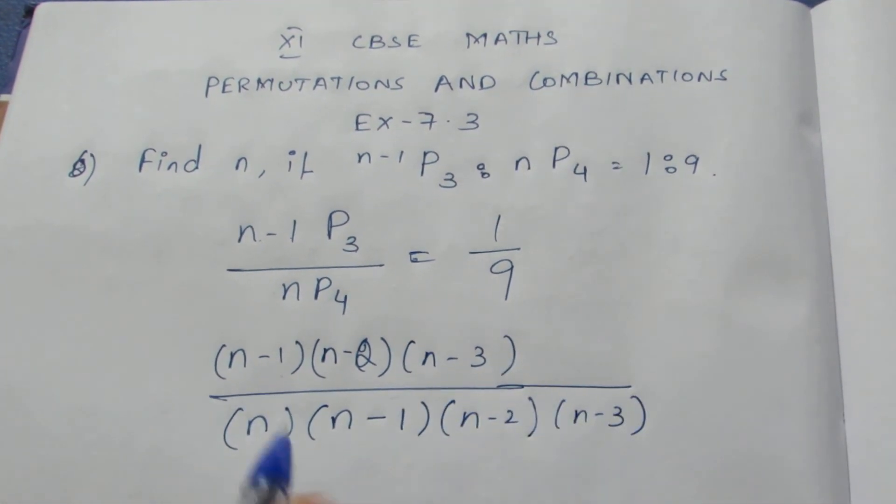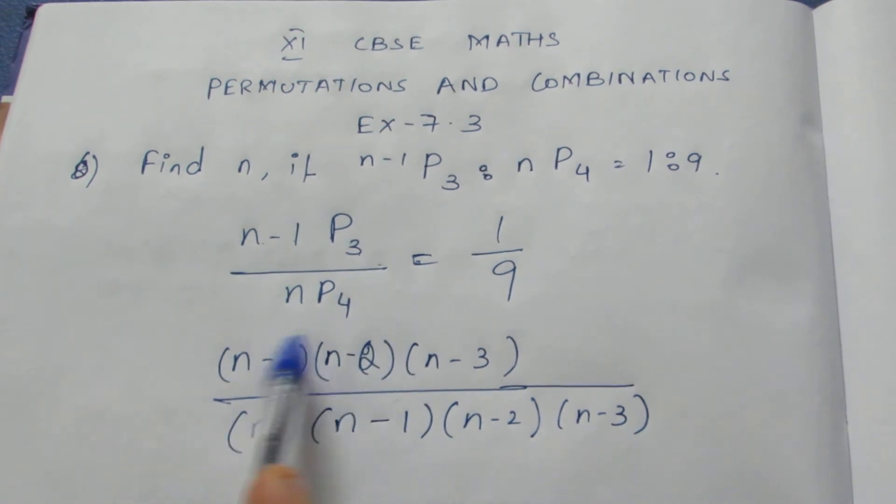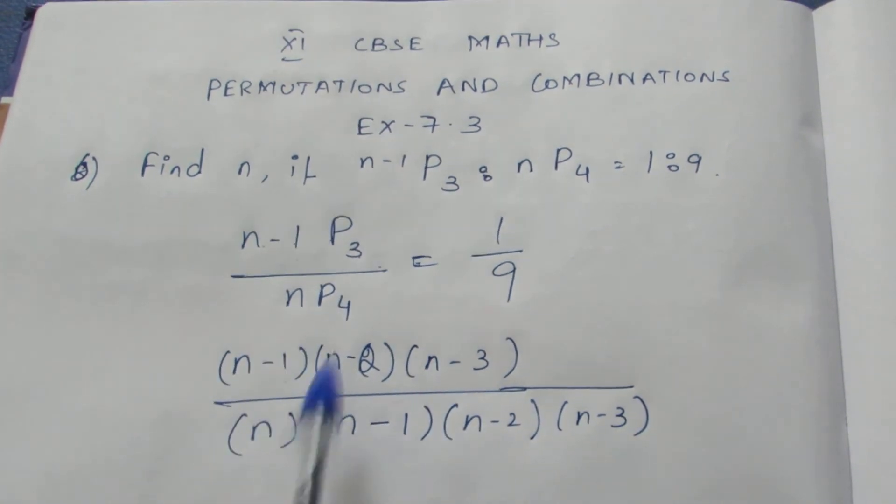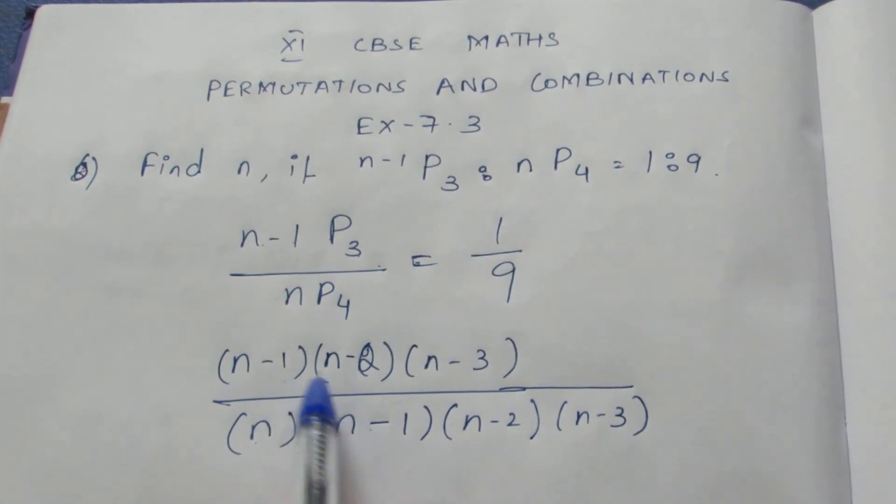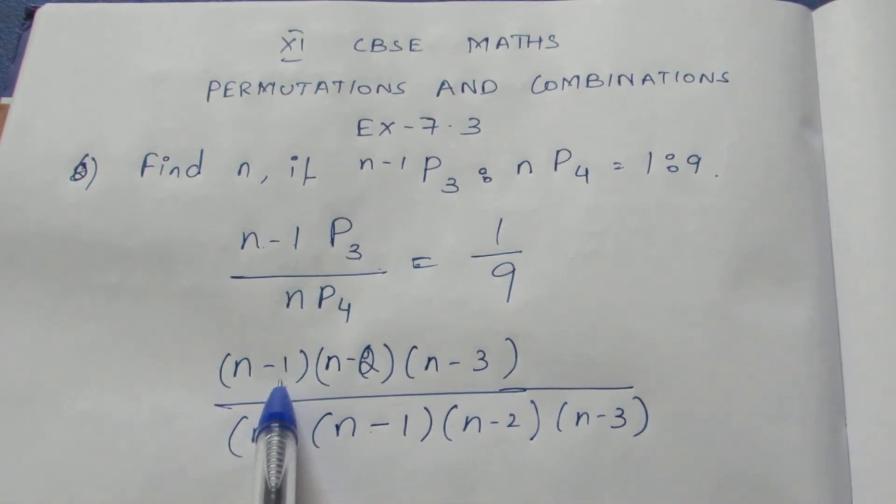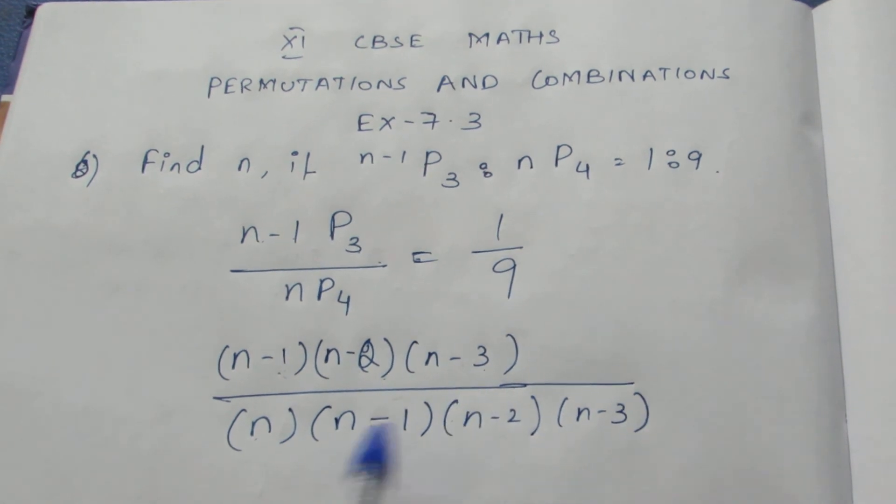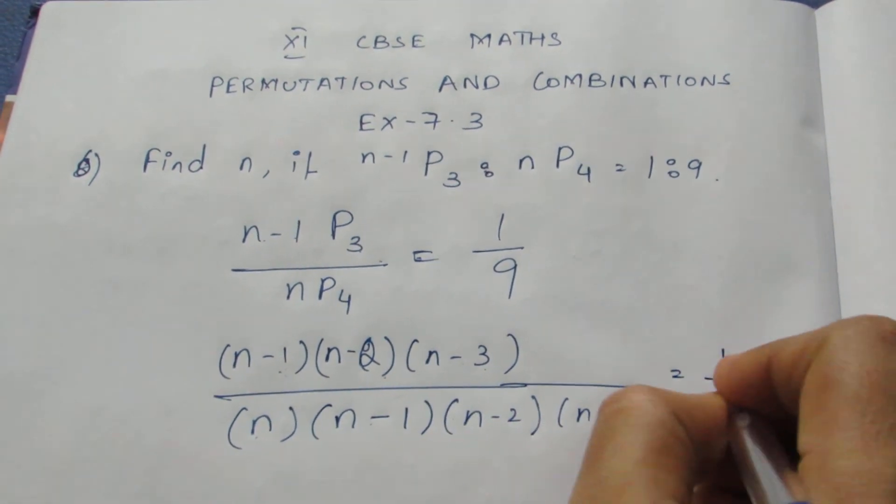For permutation, we write descending terms. Descending means we subtract 1 each time. N minus 1, then minus 2, then minus 3. This equals 1 by 9.